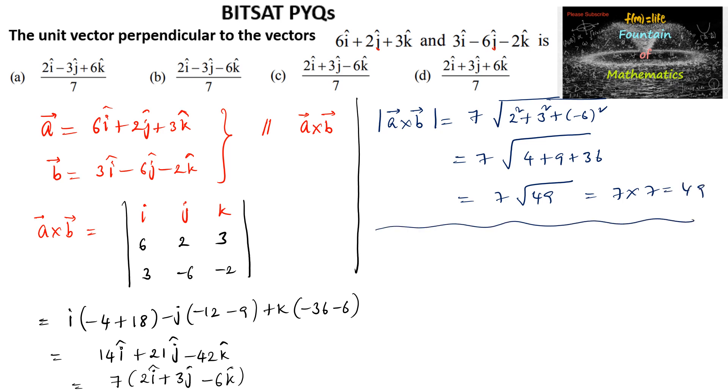And now according to the question, unit vector perpendicular to a and b can be taken as a cross b divided by mod of a cross b, plus or minus. So these are required vectors.